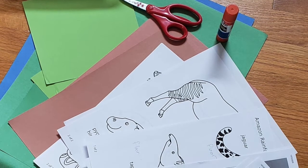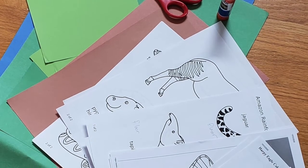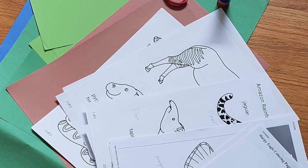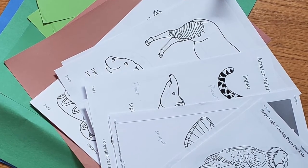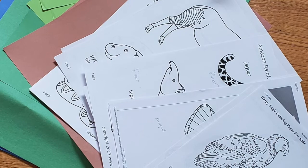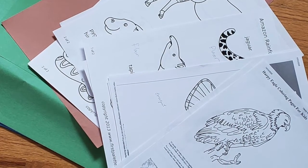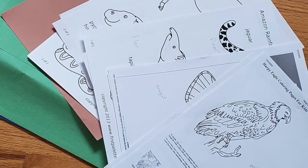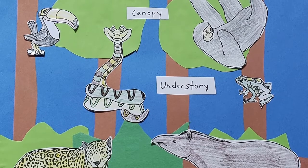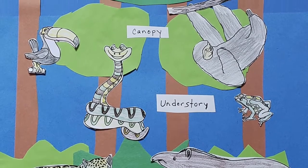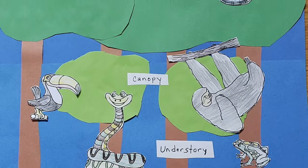Today's challenge is to create the layers of the rainforest in a collage. I took some construction paper, made the background, and added the forest out of construction paper. Then I found animals and insects that go along with the rainforest for the different floors: for the emergent, for the canopy, for the understory, and for the floor. Have fun with your challenge.